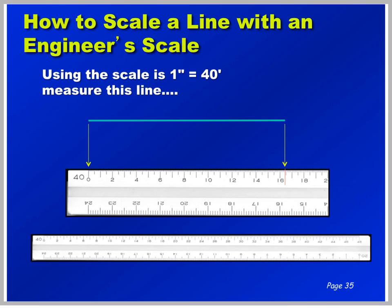Using 1 inch equals 40 foot, measure this line. First, find the 40 inch scale. Second, simply line up one end on the zero and follow over to wherever the line ends on the other side. Now read it: 10, 20, 30, 40, 100, 140, 160 — and we're about 4 ticks past the 160, making it 164 feet. Note that 16 here equals 160.